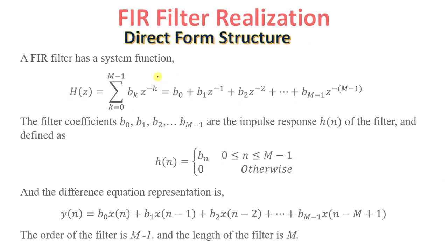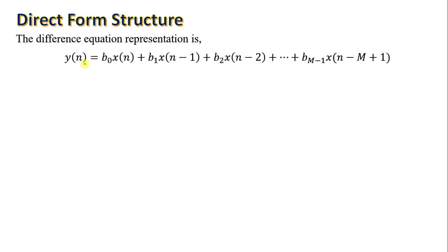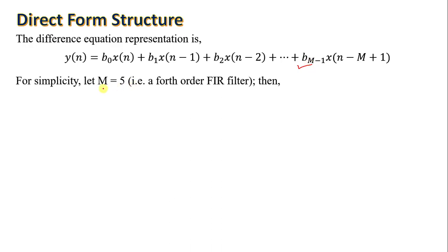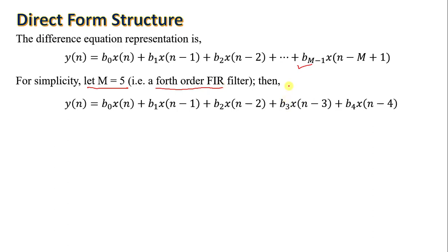Now we will realize the direct form of the FIR filter. The difference equation representation is Y(N) equals B0·X(N) plus B1·X(N−1) plus B2·X(N−2) and so on. For simplicity, taking M equals 5 — that is, the order of the filter is M minus 1 equals 4 — the equation becomes: Y(N) = B0·X(N) + B1·X(N−1) + B2·X(N−2) + B3·X(N−3) + B4·X(N−4).